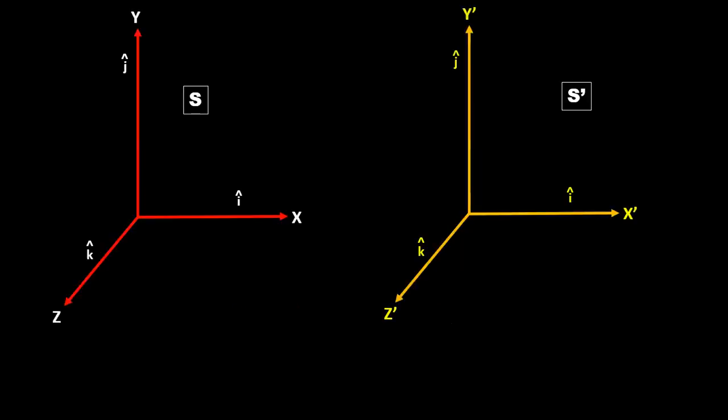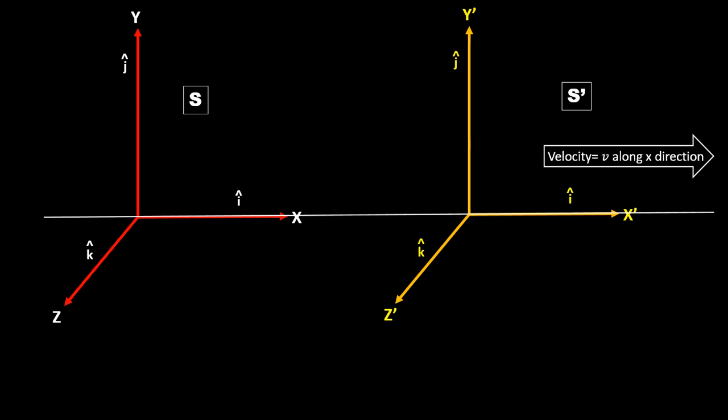Let's start. We have two frames, S and S prime. We will use some special theory of relativity in this video. If you know it, great; if not, you will still understand the concept. So there are two frames S and S prime. S prime is moving with velocity v along the x-direction, and they share a common x-axis.